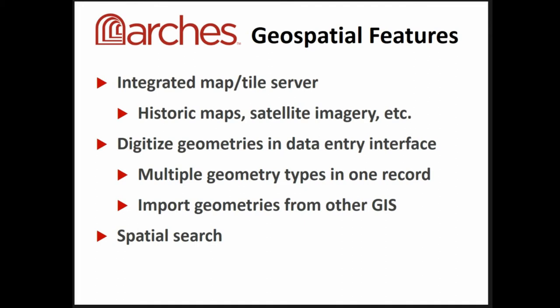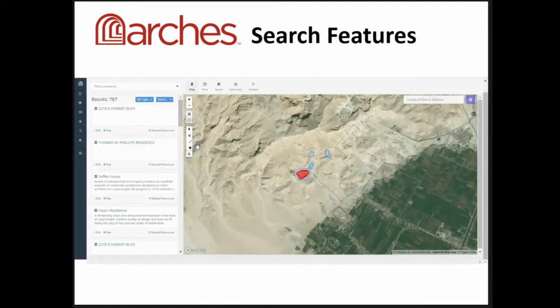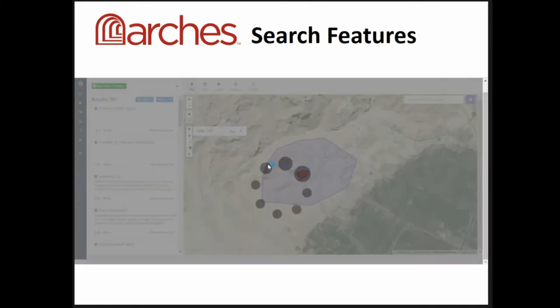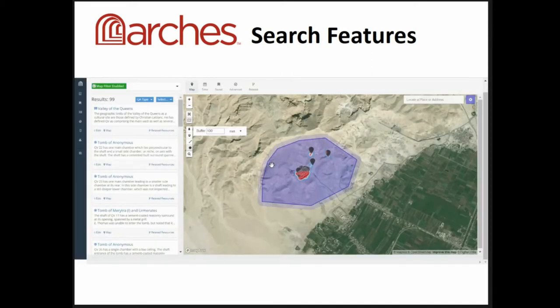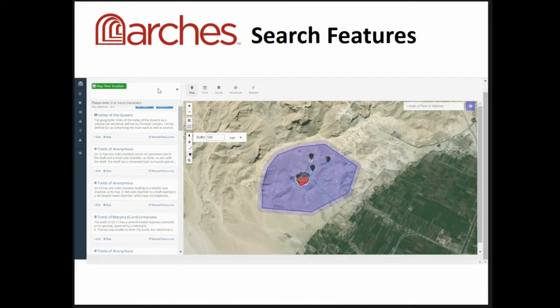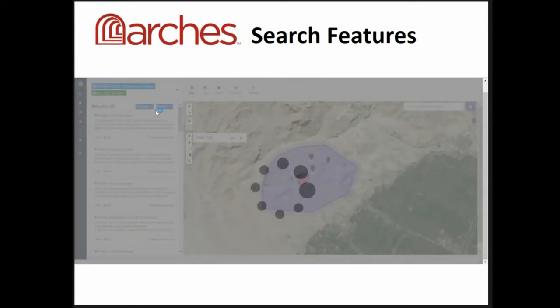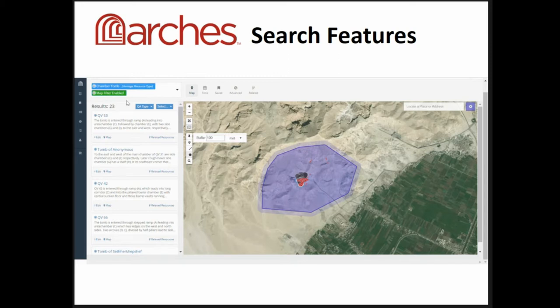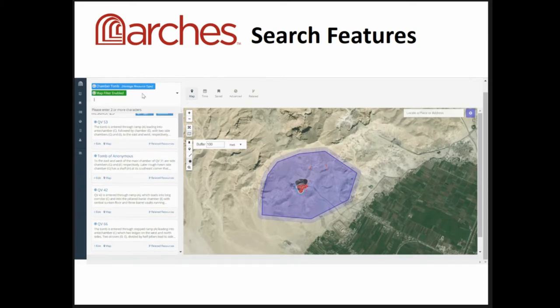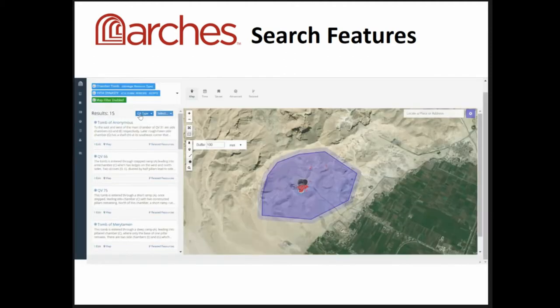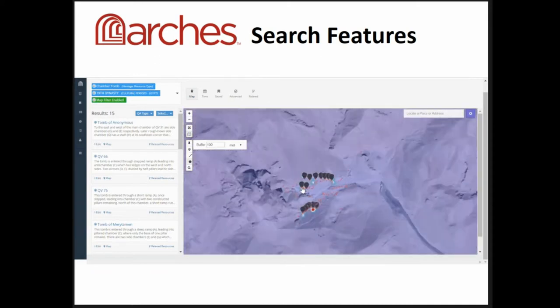Here's a summary of the geospatial features, weaving in spatial search with general search. To illustrate, I want to answer a resource question: how many chamber tombs are there in the Valley of the Queens in Egypt? I've drawn a polygon to designate the Valley of the Queens, then typed 'chamber' to get suggested terms including 'chamber tombs,' which is part of a vocabulary for Heritage Resource data. That gives me 23 results. Adding another variable — cultural period, 19th dynasty — narrows it down to 15.